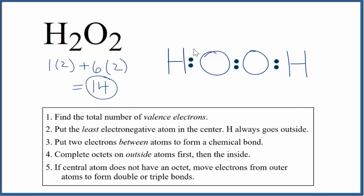So we would complete the octets on the atoms on the outside, except hydrogen only needs two valence electrons. So both hydrogens are fine. Let's complete the octets on the oxygen atoms.